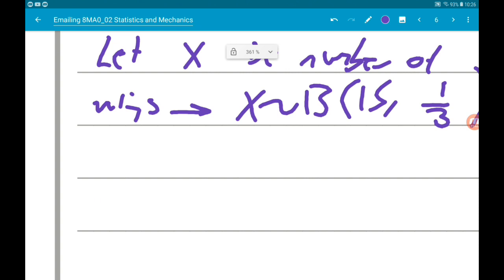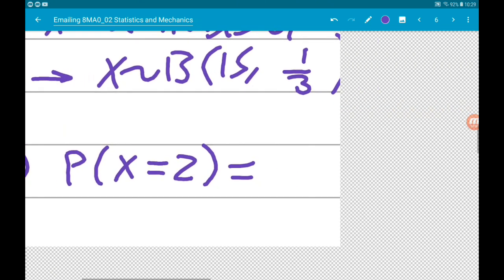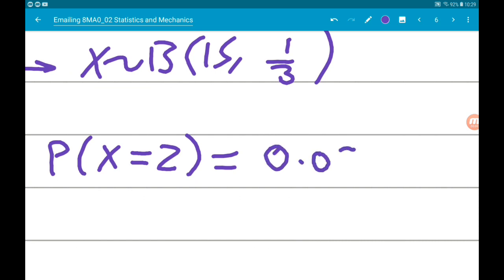Part one wants the probability that x equals two. Our calculators can do this. I've got a Casio ClassWiz. Press mode or menu and seven for distribution. We want an exact value, so we want binomial pd. We put in n is 15, p is one third, and x is two. That's going to give us 0.0599 to three significant figures.